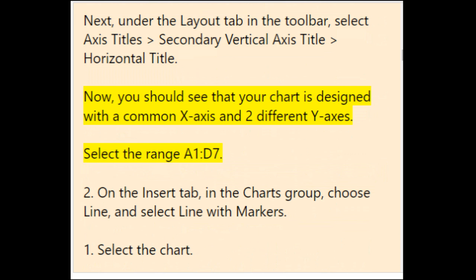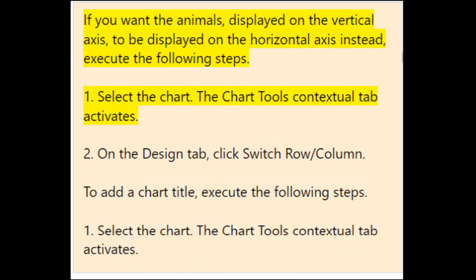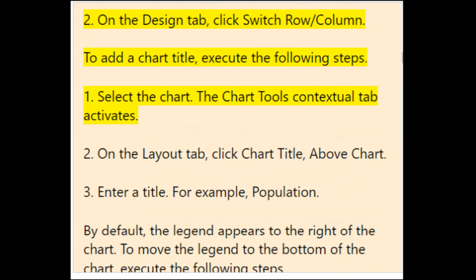Select the range A1:D7. On the Insert tab in the Charts group, choose Line and select Line with Markers. To select the chart, on the Insert tab in the Charts group, choose Column and select Clustered Column. If you want the animals displayed on the vertical axis to be on the horizontal axis instead, select the chart — the Chart Tools contextual tab activates — then on the Design tab, click Switch Row/Column.